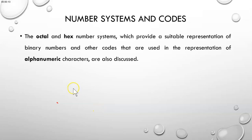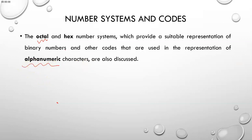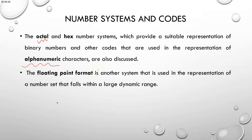This discussion is about number systems and the conversion of binary numbers to decimal. Before we go talk about these conversions, we want to mention that hexadecimal and octal number systems provide a suitable representation of binary numbers and other codes used to represent alphanumeric characters. There is also the floating point format, which was highlighted in the previous class — it provides a larger dynamic range compared to the fixed point number format.